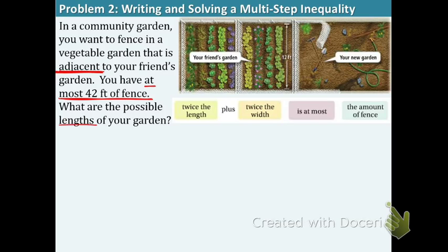Also important is the phrase at most 42 feet of fence. And then it's looking for the length. Remember the question is always having the variable that we're looking for. So let's say L is the length of garden.